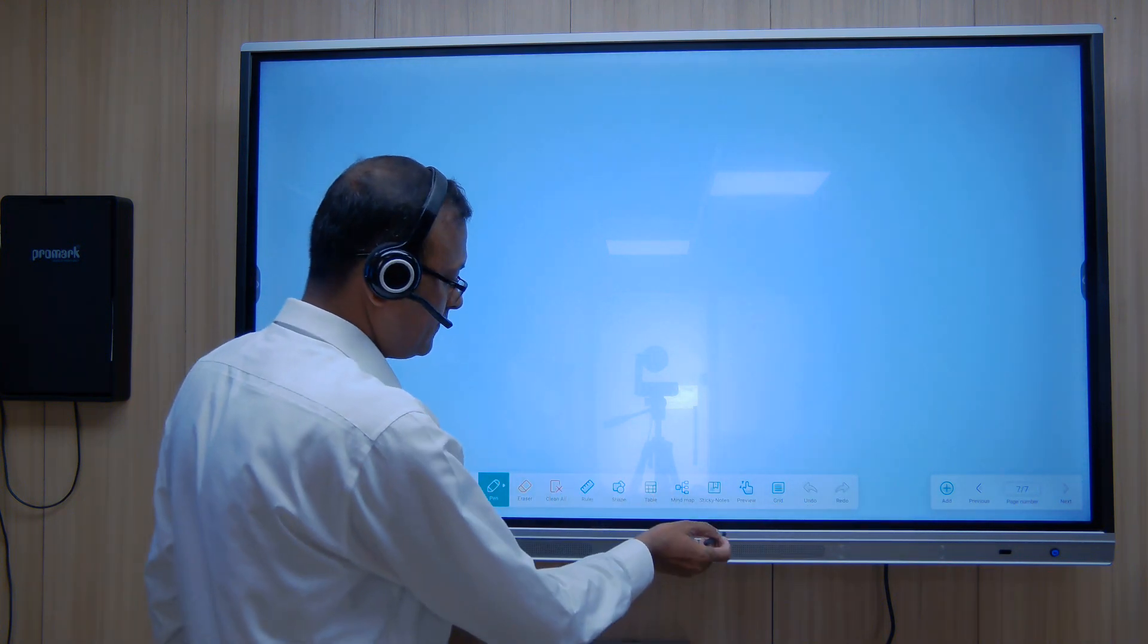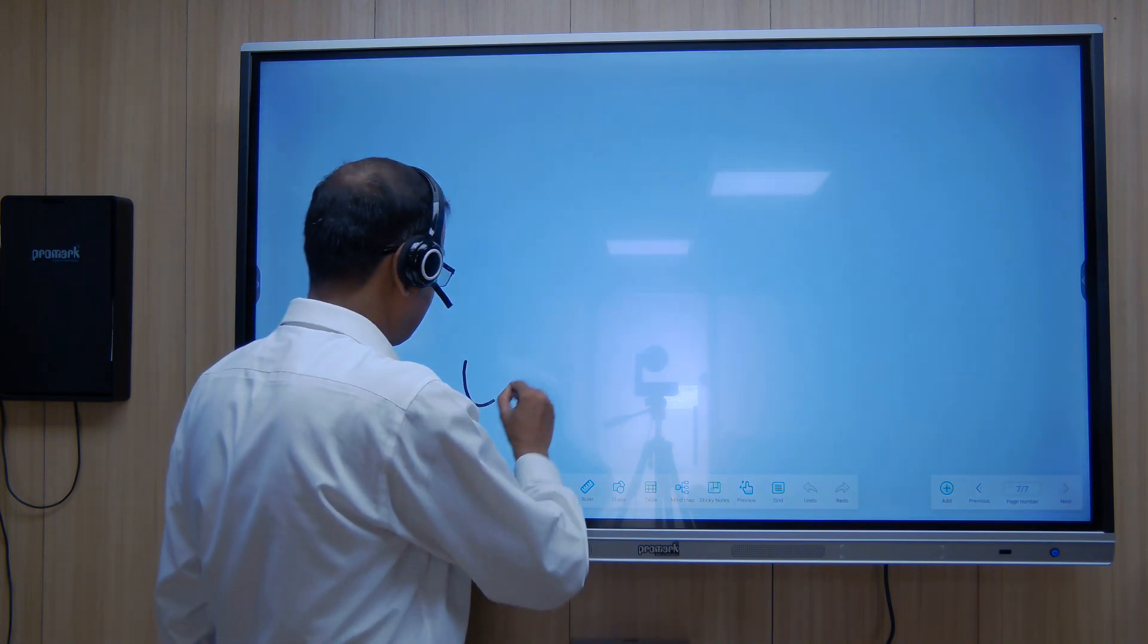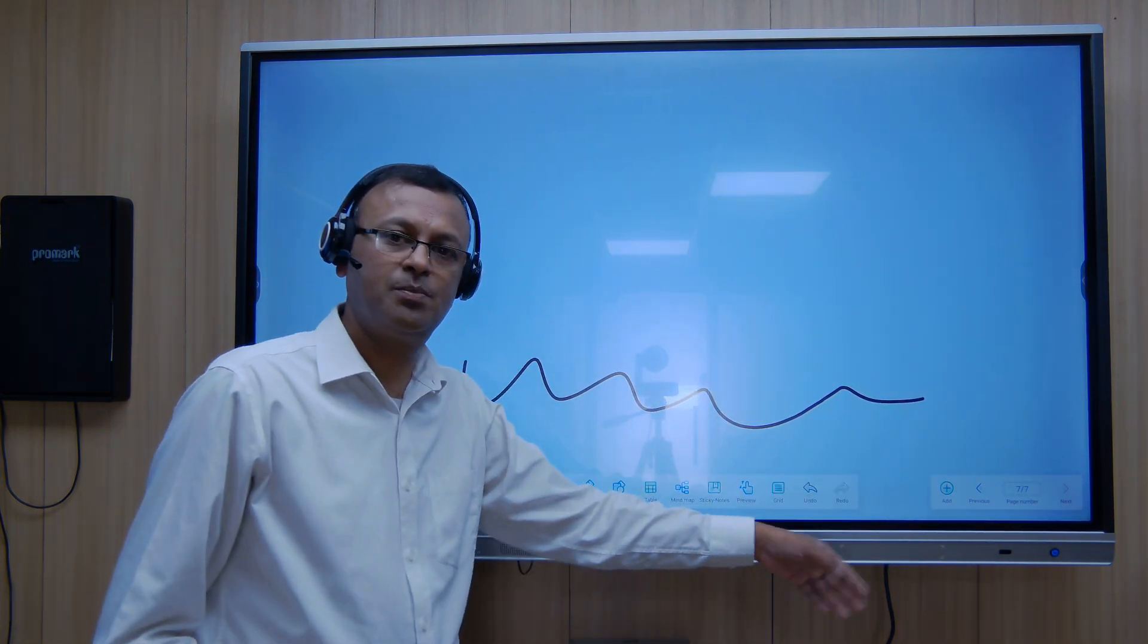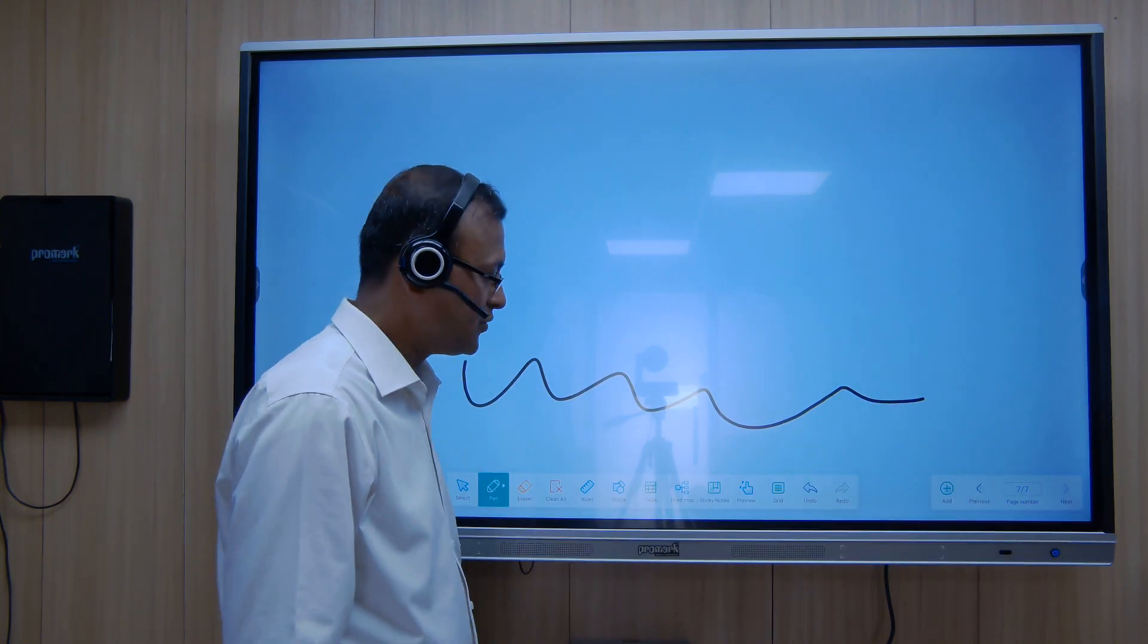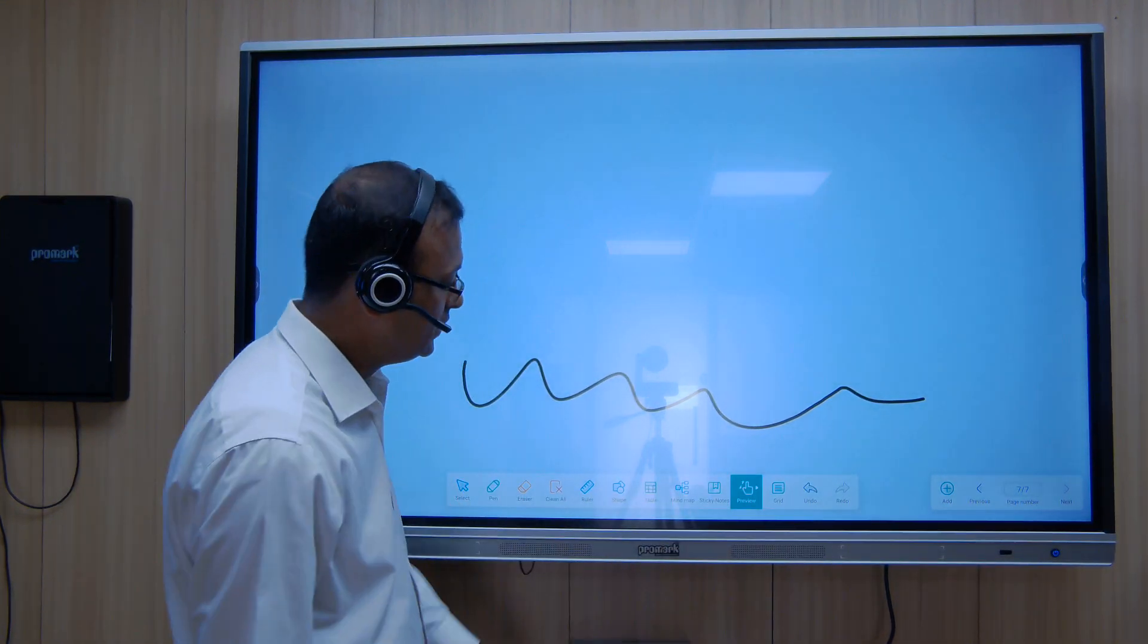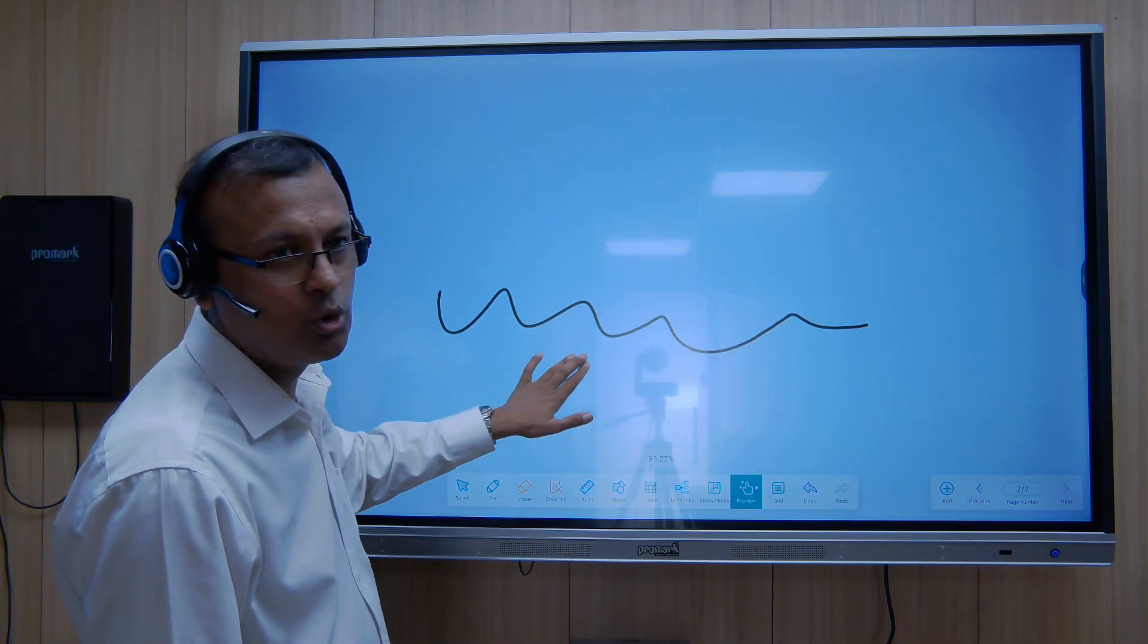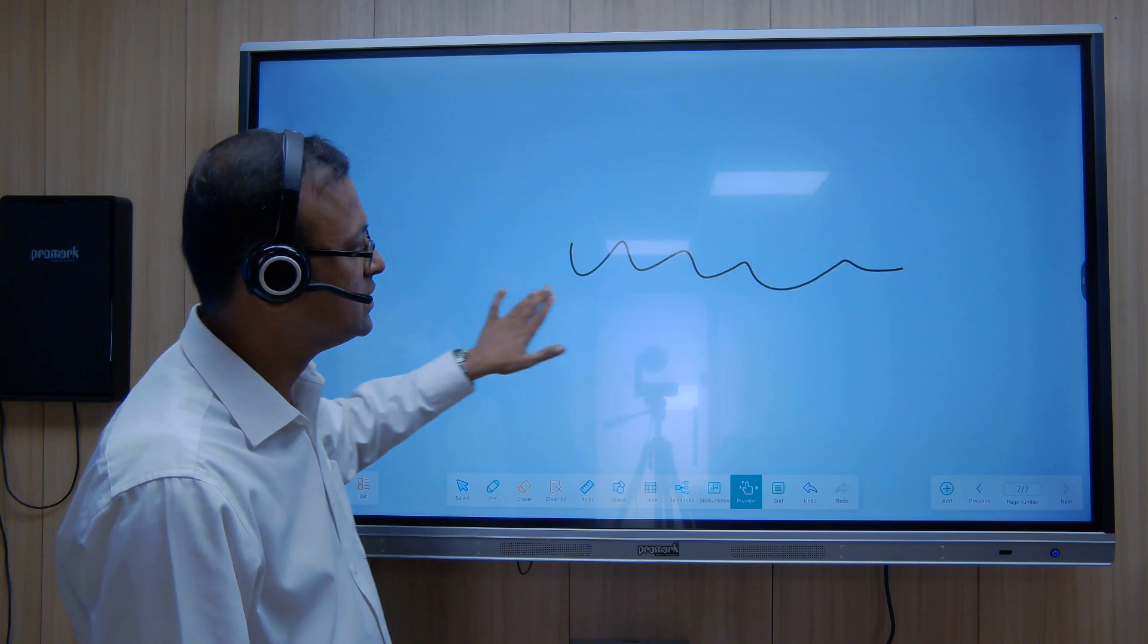We also have another feature whereby, suppose we are writing and we come to the bottom of the page and we don't want to add another page, but we want to scroll this page, we want to complete it on the same page. Then this feature is here: preview. And by this, we can scroll it up or down or towards the right or towards the left.